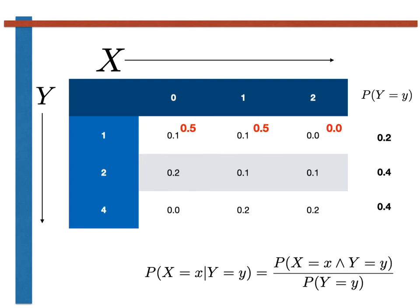By similar logic, we can calculate the conditional probability of X having values of 0, 1, and 2 given Y equals 2 as shown here, as well as the conditional probability of X having values of 0, 1, and 2 given Y equals 4 as shown here.